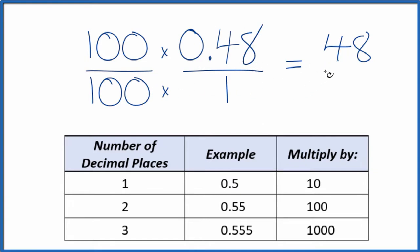So 100 times 1, that's 100. And now we have a fraction, 48 over 100. And we can simplify this further. Let's give ourselves some room.